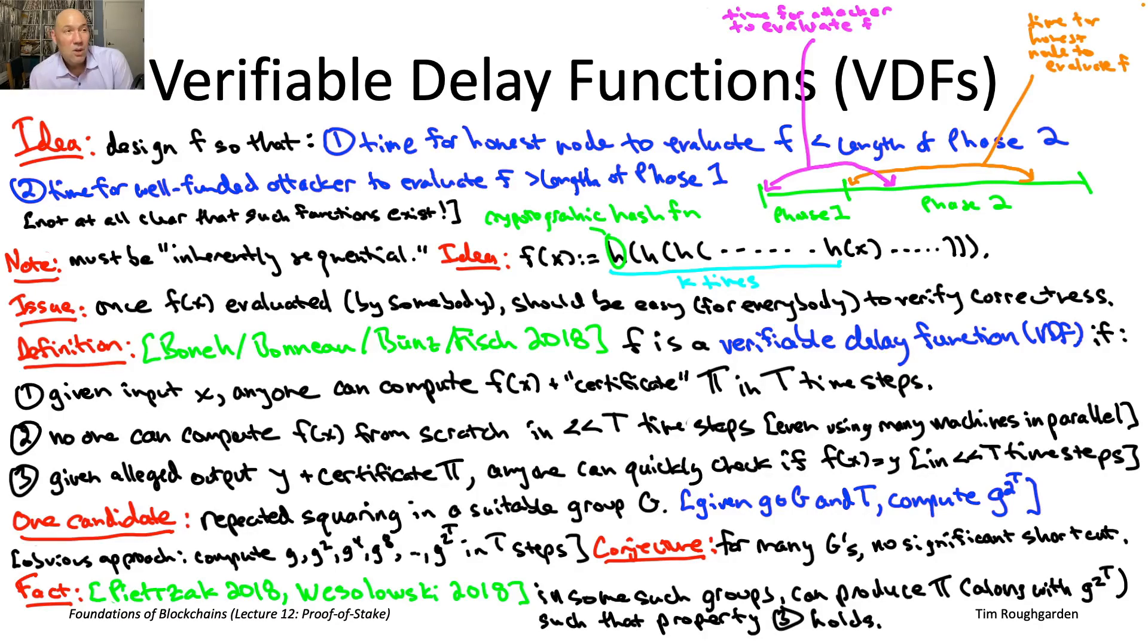So that now brings us up not merely to the state of the art in proof-of-stake random sampling, but even maybe a little bit beyond, to ideas that I expect we'll see much more of as 2023 rolls on, and then 2024 and 2025, et cetera.